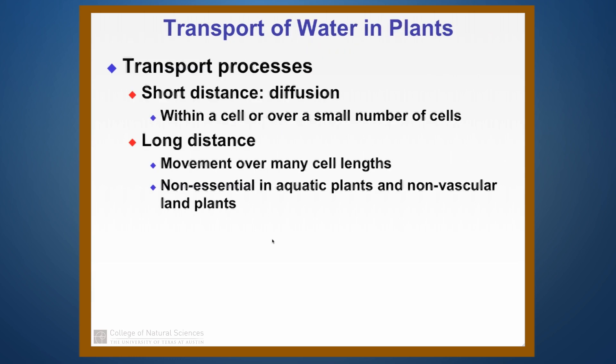We've talked about transport in animals and we've talked about diffusion. It's a short distance transport process and it's the same sort of situation in plants. For short distances, diffusion is used to move things around — within a cell or over just a very small number of cells. And just like in animals, we have longer distance movements that require different ways of getting materials from place to place. In plants we have to move water and the things dissolved in it over many, many cell lengths.